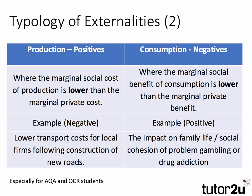Consumption externalities can also be negative. For the AQA board this is where the marginal social benefit is lower than the marginal private benefit — one person's consumption imposes a negative benefit on another person. For example, the impact on family life, social cohesion, of growing issues of problem gambling or drug addiction. So let's work through these two diagrams as well.